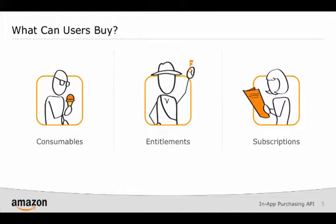Entitlements are any type of content that you sell within your app that require access rights. This type of content is available anywhere the customer is logged in to the Amazon app's mobile client. An entitlement to content does not expire. As such, customers can purchase entitled content only once. Once purchased, the entitlement is granted to the customer's Amazon account, and that entitlement is used to access the content from any eligible device the customer has linked to their account. Some examples of entitled content are additional game levels and individual magazine issues.